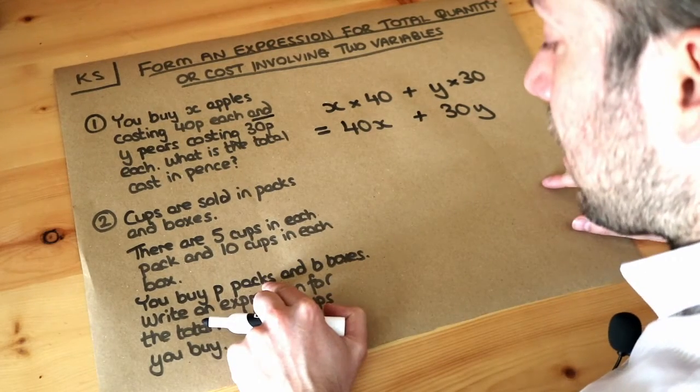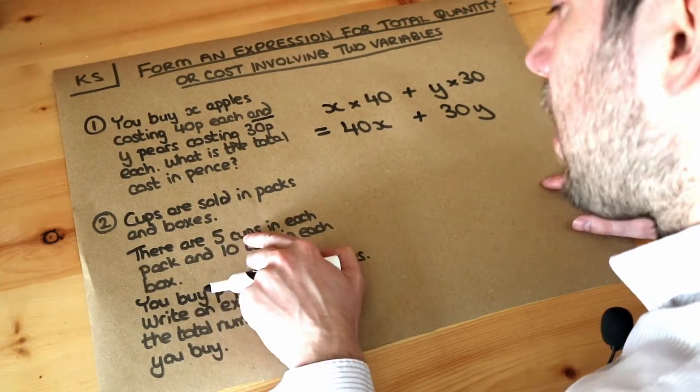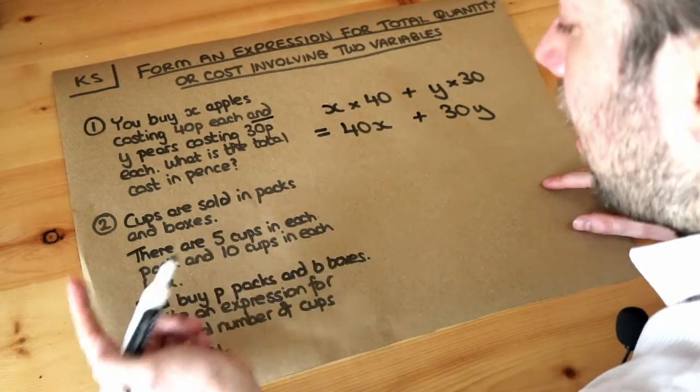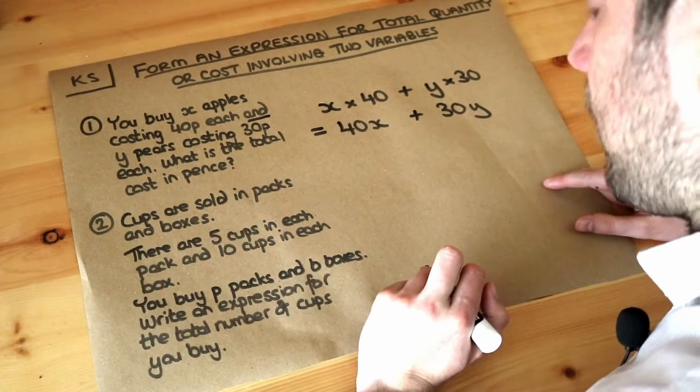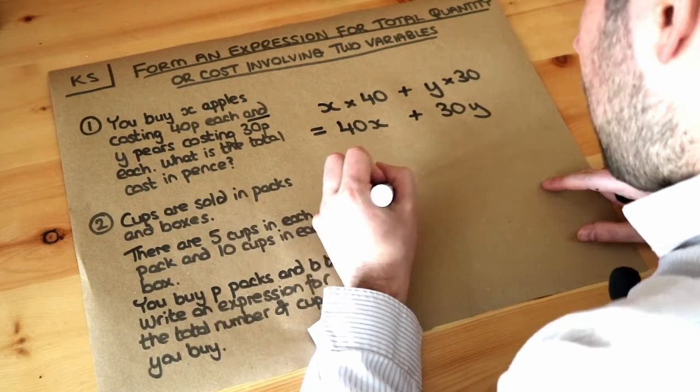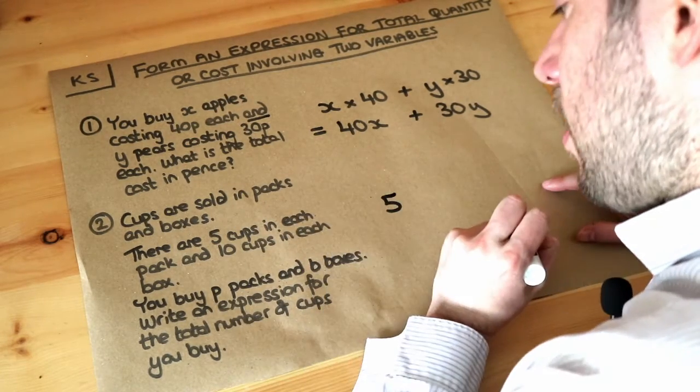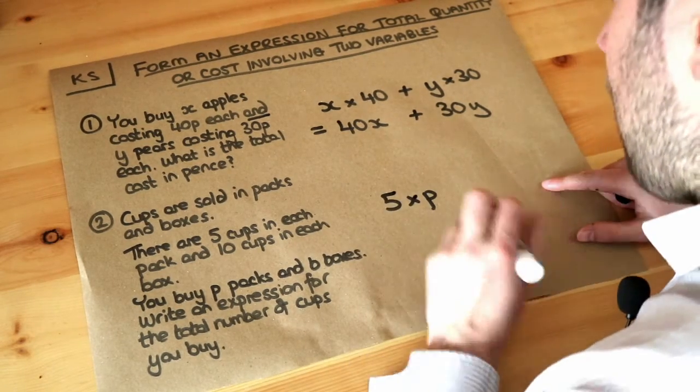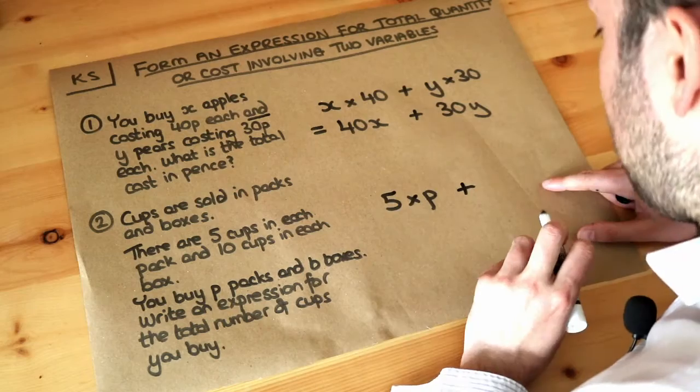Now if I was to tell you that there were 10 packs of cups and there's five cups in each pack, how many cups would there be? Well you just do 10 times 5. So again we're multiplying these together. So we've got five cups in each pack and we're timesing that by p because there's p packs, and we've also got the cups in the boxes as well. So we're going to add on the cups in the boxes.